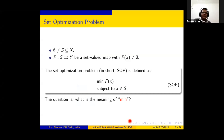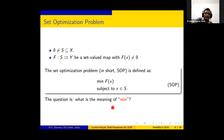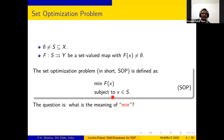The set optimization problem: if S is a non-empty subset of a real normed space X and F is a set-valued map with non-empty values, then the set optimization problem is to minimize the objective function F, which is a set-valued map, over the feasible set S. The question is: what is the meaning of 'minimum' in an optimization problem with a set-valued map? To define this, we need some kind of ordering to compare the values of the objective function. Since the objective function is set-valued, we need set-order relations to compare objective values.